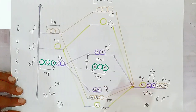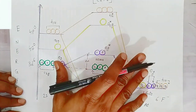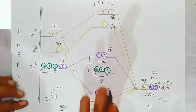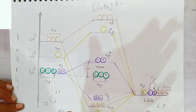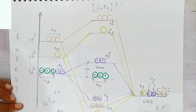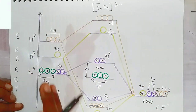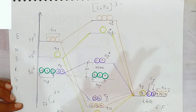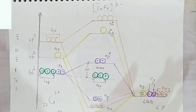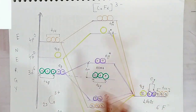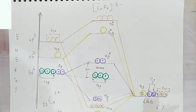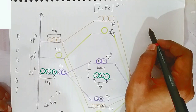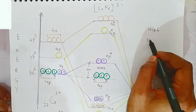In [CoF₆]³⁻, the number of unpaired electrons is greater, which is why this complex is paramagnetic in nature. Using molecular orbital theory, we can explain the paramagnetic character as well as the partial ionic character, since all electrons come from the metal. Because there are many unpaired electrons, this is called a high spin complex.